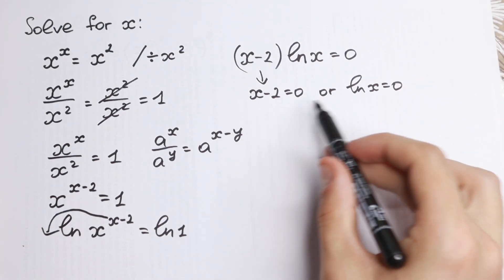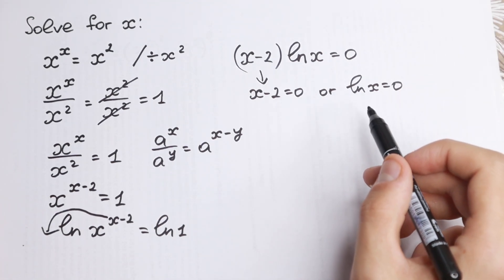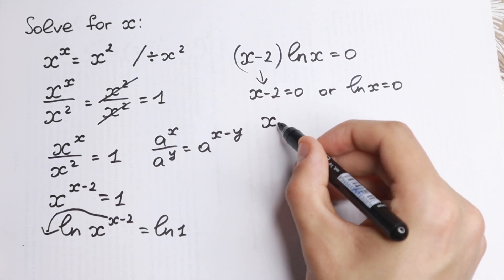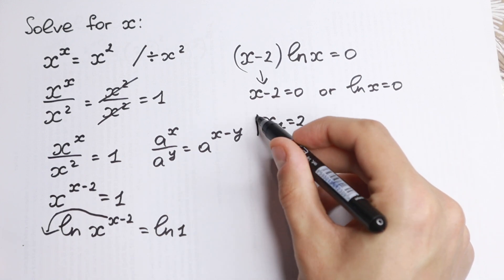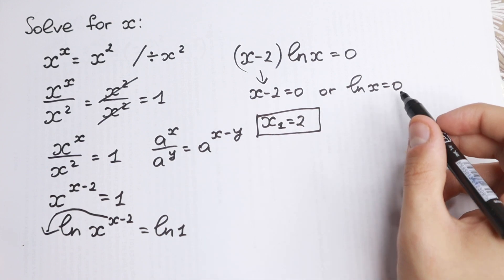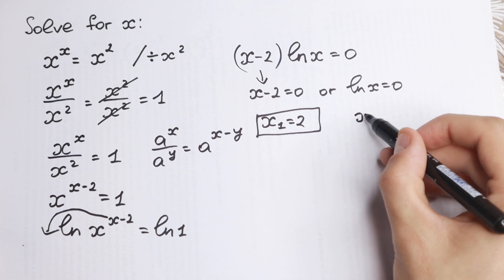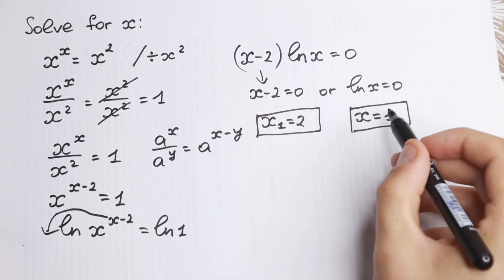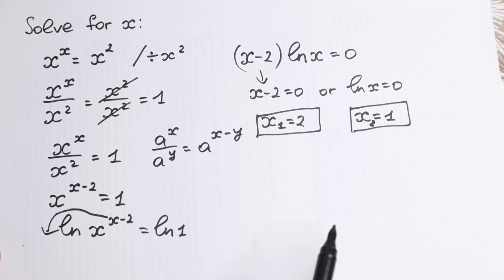And if we find our roots right here we will have our answer. x minus 2 equal to 0 so x first equal to 2. This is our easy case. And on the right hand side natural log x equal to 0 then x equal to 1. So these are our two roots in this problem.